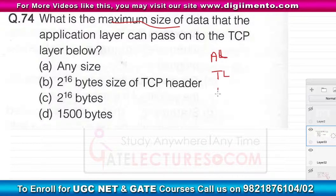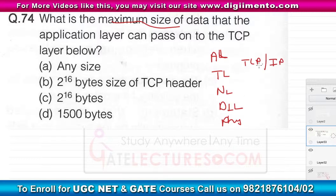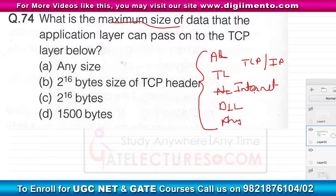We know there is application layer, then transport layer, then network layer, data link layer, and physical layer. I am talking about the TCP/IP model, not the OSI model. In the TCP/IP model, these five layers are the main layers, and the network layer is called the internet layer.